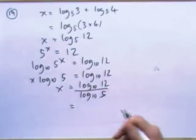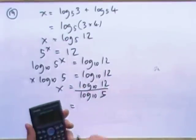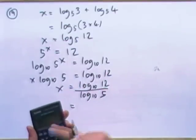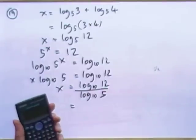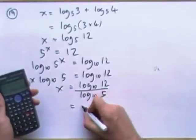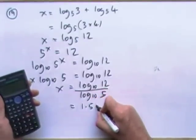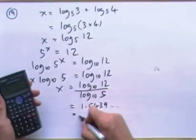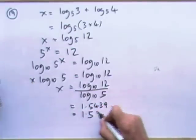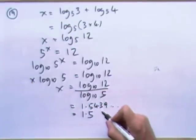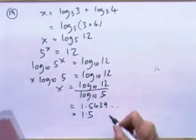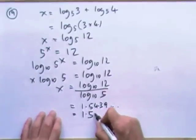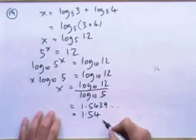Now press the buttons: log 12 divided by log 5 comes out as approximately 1.5439, so x is approximately 1.54.